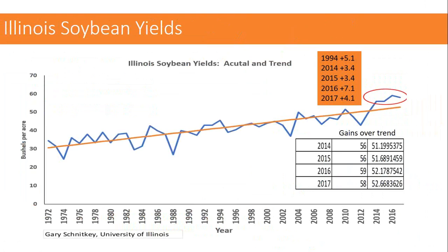Looking at Illinois soybean yields since the early 1970s, we've seen a steady increase — about half a bushel per year from genetic breeding gains. In specific years like 1994 and 2014–2017, we've seen above-trend-line yield gains. Not only is that from genetic gain by breeding, but management practices have also changed during this time.